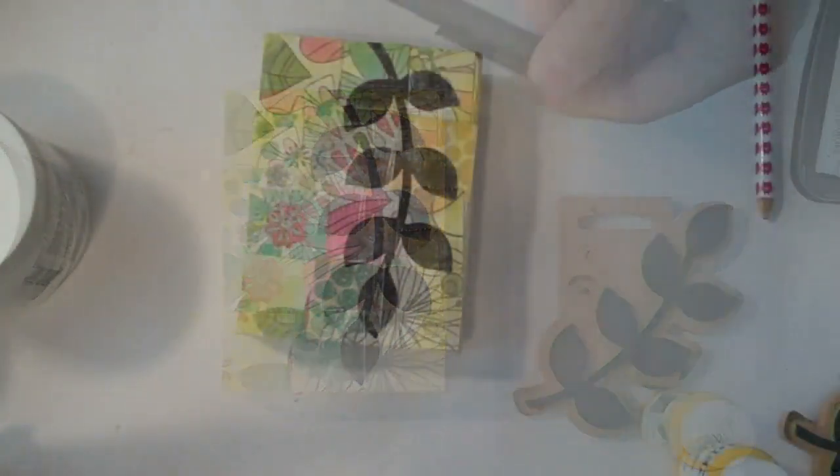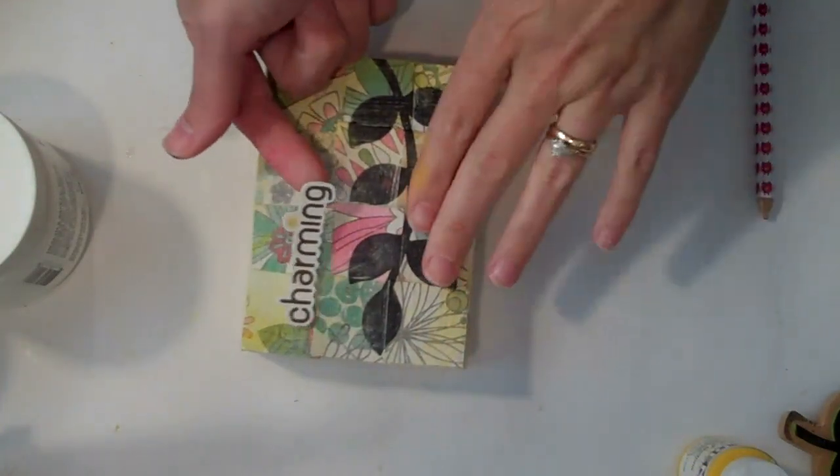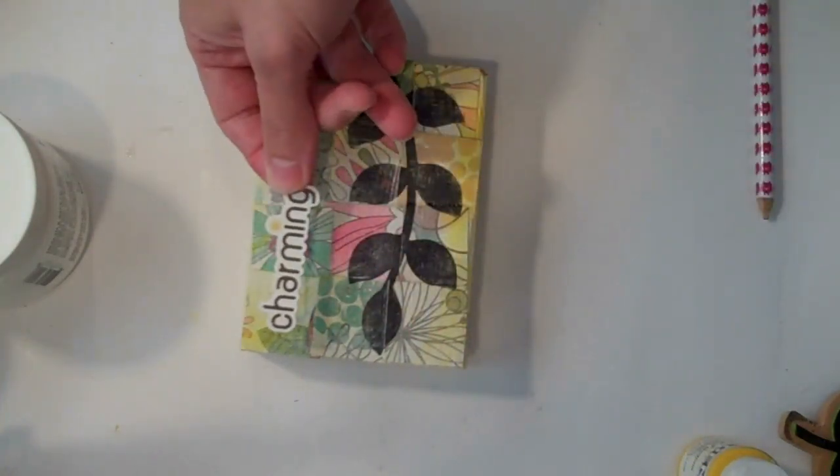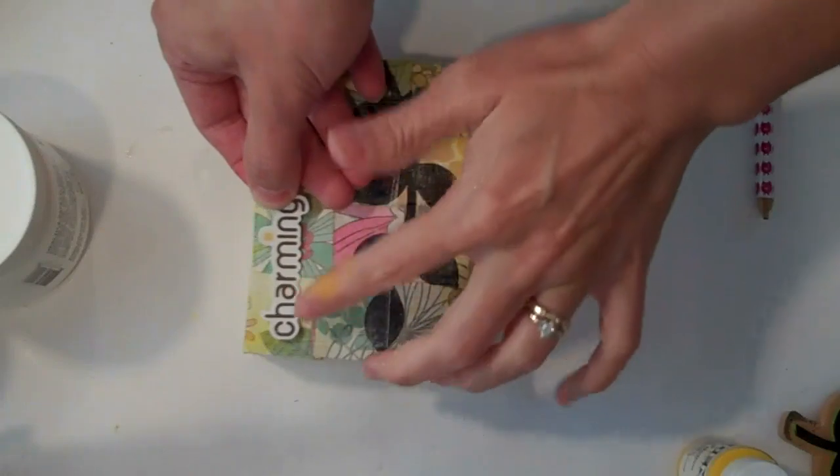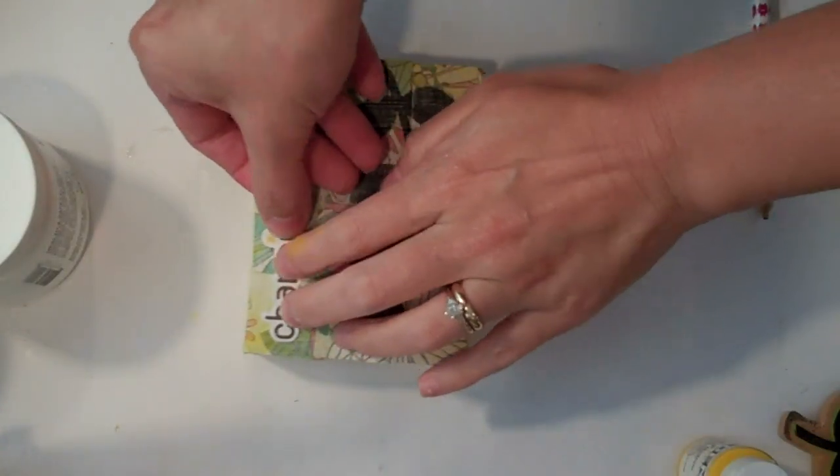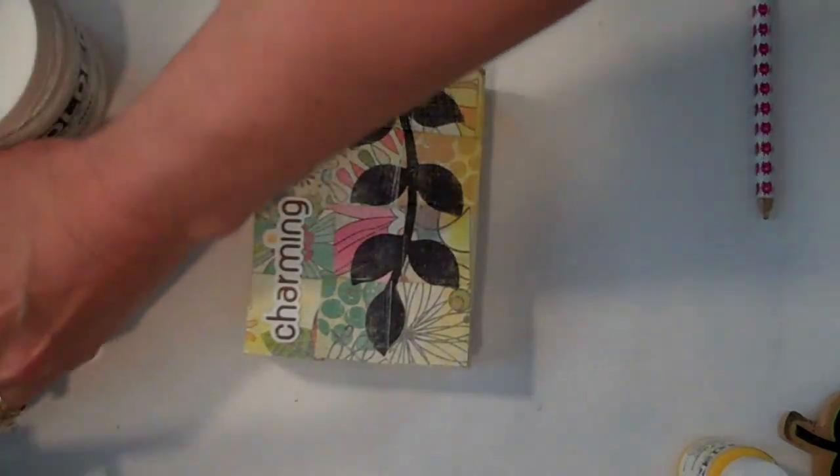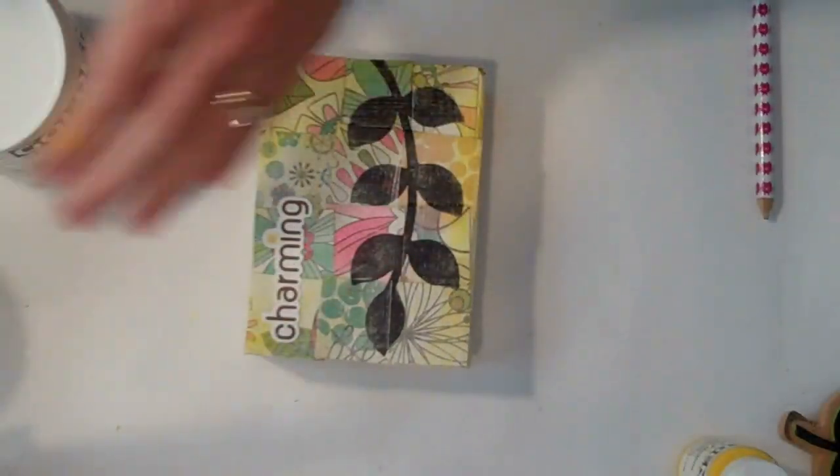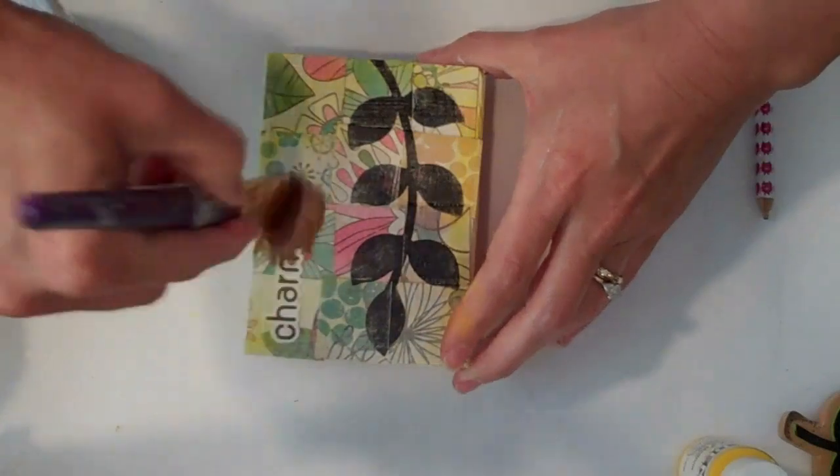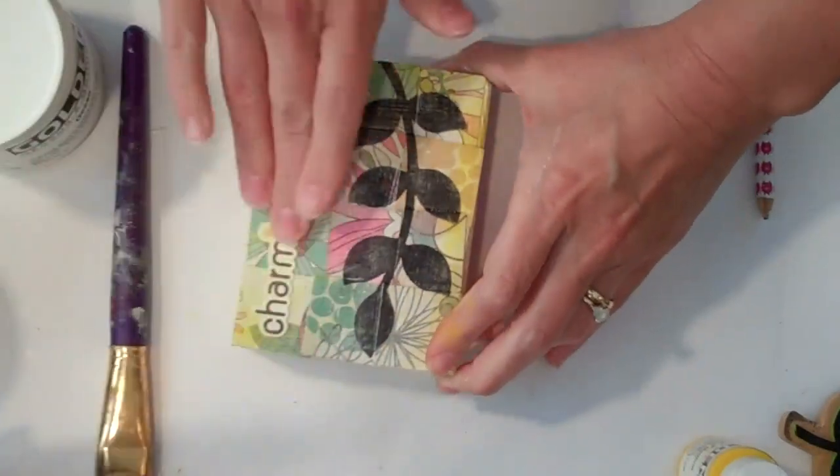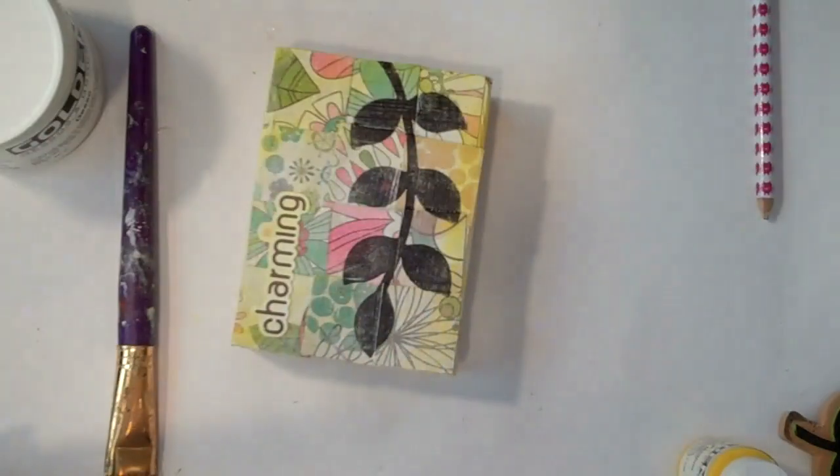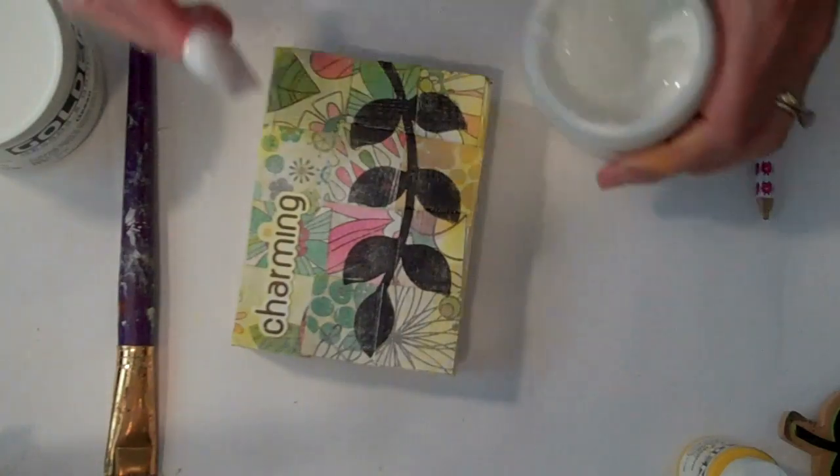I found this sticker word that was from the Burke Collection and I just want to put it on here. And to distress this a little bit I'm going to just use a little bit of my gesso again. I still have my brush here. I'm just going to kind of blend this in a little bit. Kind of shade it. And I'm going to put a thin coat of gel medium across the top just to seal that.